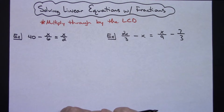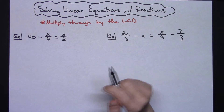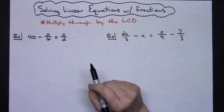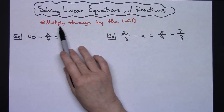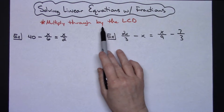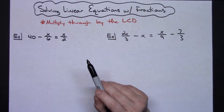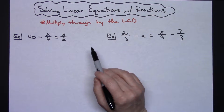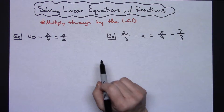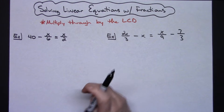In this video we're going to be taking a look at how to solve a linear equation that has a fraction in it. The technique we're going to use is multiplying through by the least common denominator. If you do that as your very first step, it is going to eliminate the fractions and make the problem much easier for you to solve.